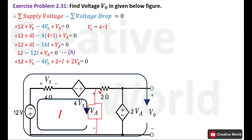Move to next element: current entering terminal is positive, so voltage across the 2 ohm resistance is taken with positive sign — that is the product of current and resistance, plus 2 multiplied by i. We are following passive sign convention: current entering terminal across a resistance is taken with positive sign, and current leaving terminal is taken with negative sign. This assumption applies only when no polarity notation is specified across the resistance. Move to next element: current entering terminal is positive, so 2Va is taken with positive sign.